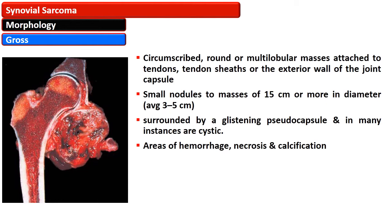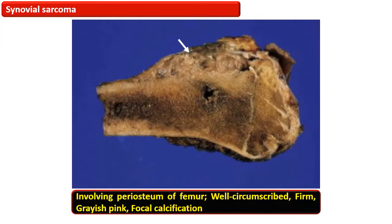Grossly, synovial sarcoma is a circumscribed round to multilobular mass attached to the tendon, tendon sheath, or exterior wall of the joint capsule. These nodules can be small or masses of about 15 cm or more in diameter, with an average size of about 3 to 5 cm. The tumor is surrounded by a glistening pseudocapsule and may become cystic. There may be areas of hemorrhage, necrosis, and calcification. A deep-seated synovial sarcoma involving the periosteum of the femur appears as a well-circumscribed firm grayish-pink lesion with foci of calcification.